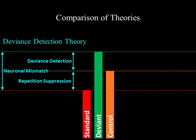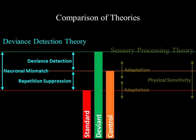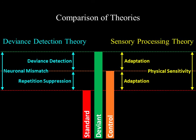Control sequences have been brought in to validate the deviance detection theory. According to this theory, the mismatch response can be split into repetition suppression — shown by the difference between the standard and the control — and deviance detection, shown by the difference between the deviant and the control. However, according to the sensory processing theory, the differences between standard and deviant ERP responses are due to low-level differences in their physical makeup, while control sequences are inherently confounded by adaptation or changes in the response due to time and repeated exposure to sounds, given that the auditory system is known to be highly dynamic.